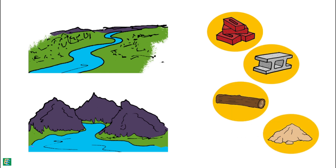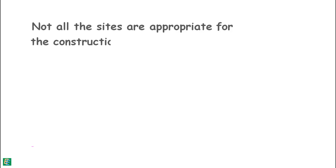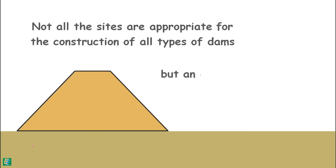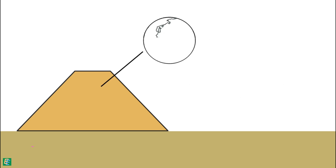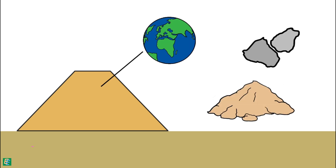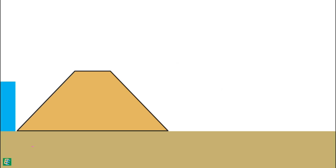Different sites require different types of material for the construction of a dam. Not all sites are appropriate for all types of dams, but an earth dam can be designed to be constructed at almost any site. In earth dams, the construction material is earth — that is, rock and soil.